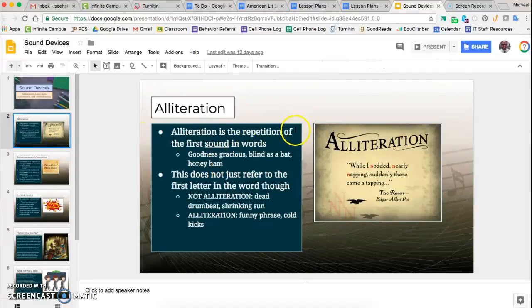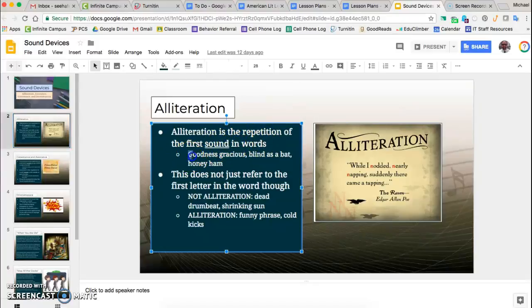This first slide shows the idea of alliteration. This is the repetition of the first sounds in words. Goodness gracious - we have the g in goodness and g in gracious. Blind is a bat - we have b in blind and b in bat.